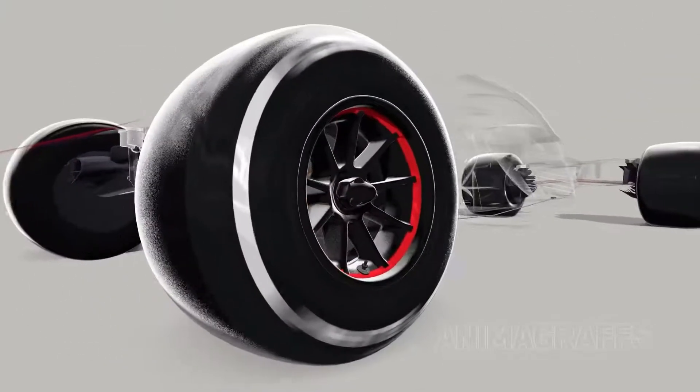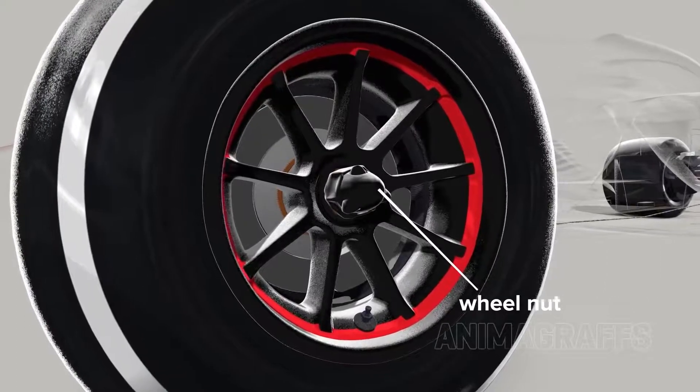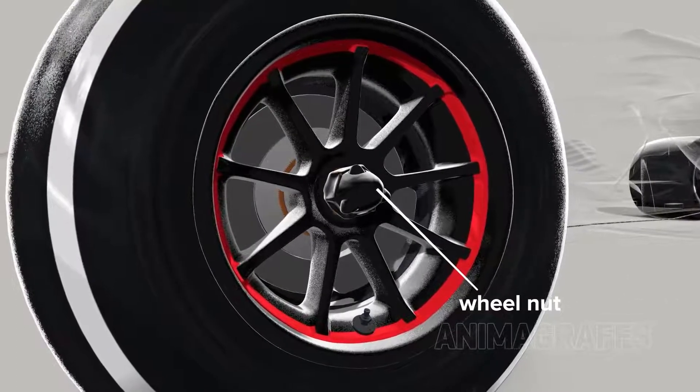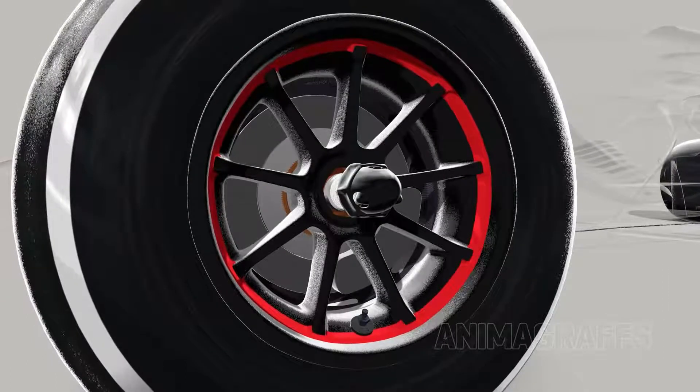The wheels are secured to the hub with a single wheel nut. Metal retention pins keep the nut securely in place. A specially designed wheel gun pushes these pins down when removing the nut.